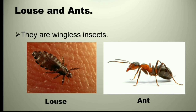Some insects do not have wings, such as louse and ants. That is, they are wingless insects.